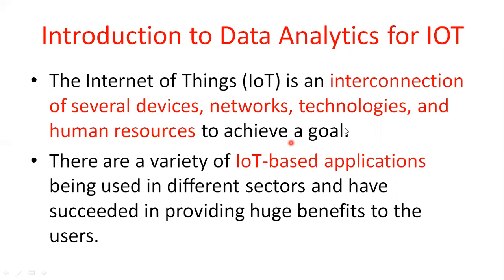For example, a goal may be a home automation system. The purpose of a home automation system could be monitoring the light level in a room. Another goal in the case of smart cities could be identifying vacant places — for example, in a smart parking application, identifying vacant parking spaces. That means different devices work together to achieve a common goal.